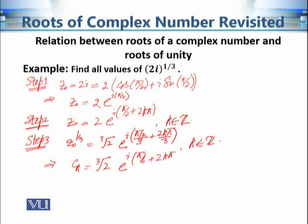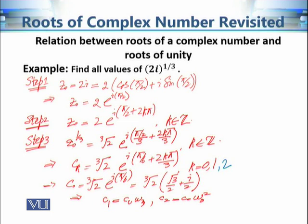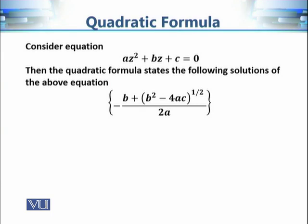So the cube roots of 2i are: cube-root(2) multiplied by e raised to power i·(pi/6 + 2k·pi/3), where k varies over 0, 1, and 2. The first root c-naught is cube-root(2)·e raised to power i·pi/6. We don't need to separately calculate c1 and c2 — we can simply multiply c-naught by the cube roots of unity: c1 equals c-naught·omega-3, and c2 equals c-naught·omega-3 squared.